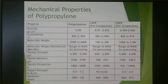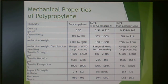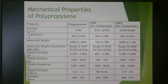Here are the mechanical properties of polypropylene compared to low-density and high-density polyethylene. Polypropylene tends to be lower density than even low-density polyethylene. Its crystallinity tends to be similar to low-density polyethylene, while the molecular weight tends to be more similar to high-density polyethylene. You can make wide ranges of molecular weights depending on processing.